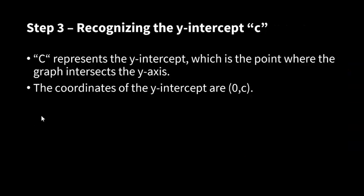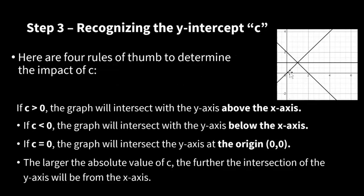Step 3 discusses recognizing the y-intercept c. c represents the y-intercept, which is the point where the graph intersects with the y-axis. The coordinate is 0 and c. And we can see several examples, like the ones over here. Here are the interception points.